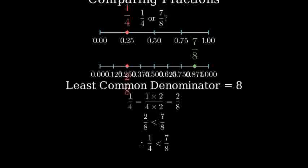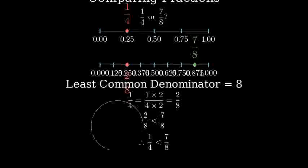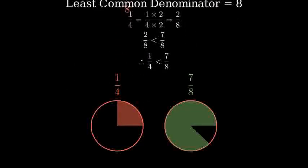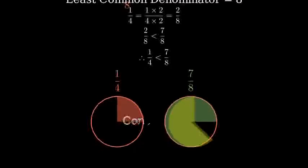To visualize this another way, let's look at these fractions as parts of a whole. Here's 1 fourth of a circle, and here's 7 eighths of a circle. We can clearly see that 7 eighths covers more area than 1 fourth.